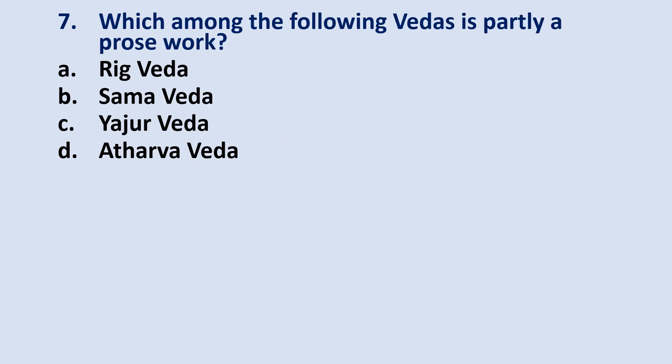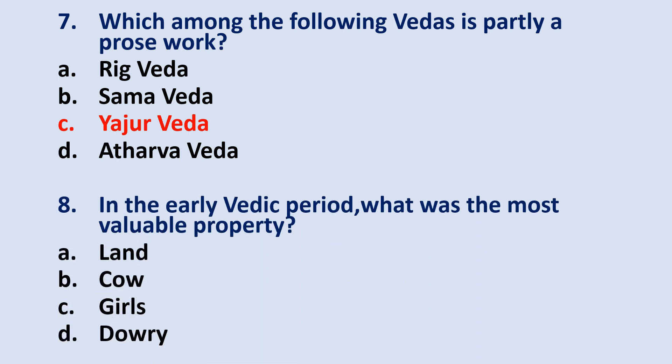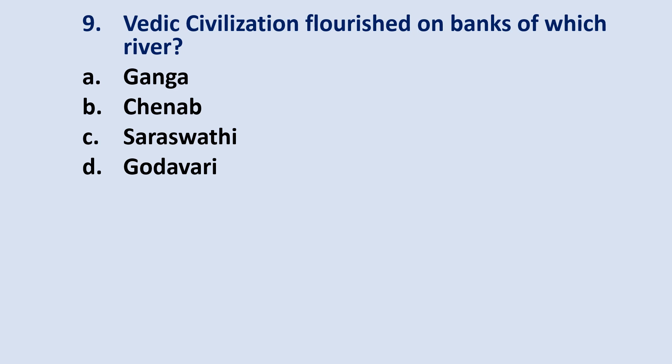Question number seven: which among the following Vedas is partly a prose book? The answer is option C — Yajur Veda. Question number eight: in the early Vedic period, what was the most valuable property? The answer is option B — Cow. Ninth question: the early Vedic civilization flourished on the banks of which river? The correct answer is option C — Saraswati.